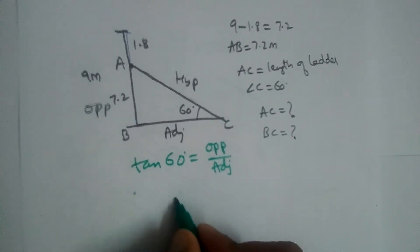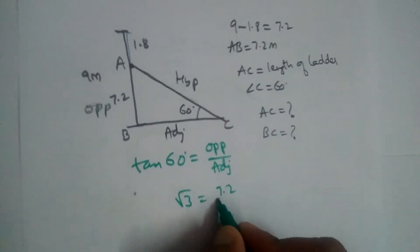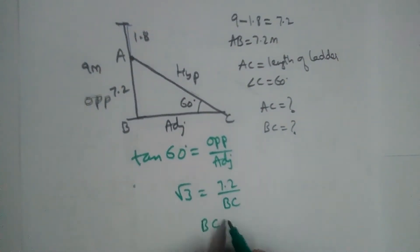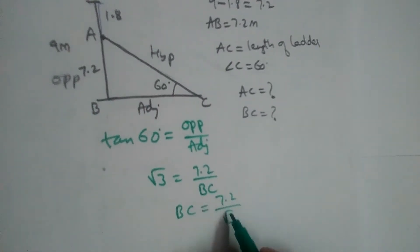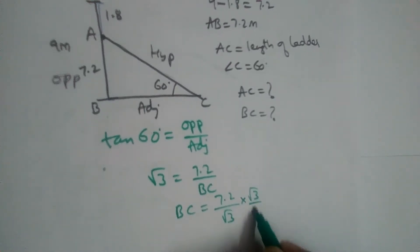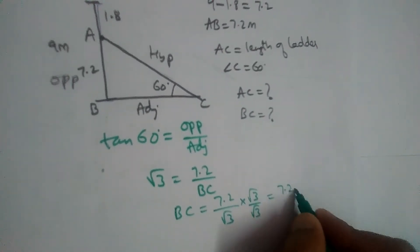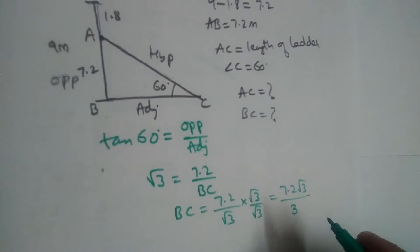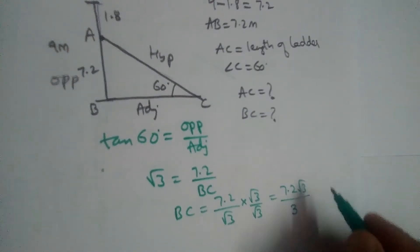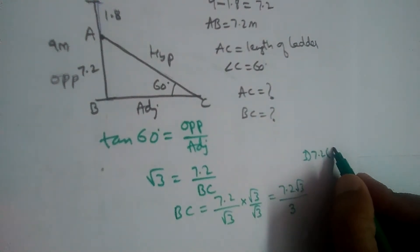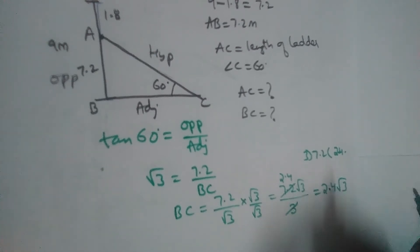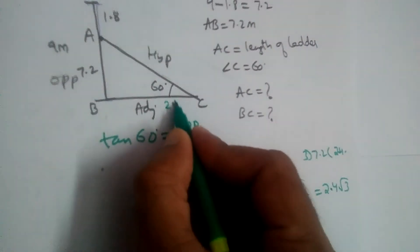Tan 60 is √3, and the opposite side is 7.2, divided by adjacent BC. Cross-multiplying, BC = 7.2 divided by √3. We rationalize: 7.2√3 divided by (√3 × √3) = 7.2√3 divided by 3, which gives us 2.4. So BC = 2.4√3.